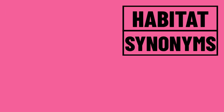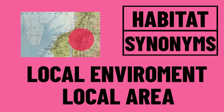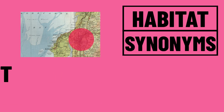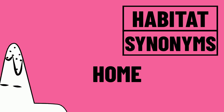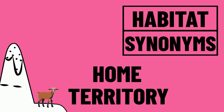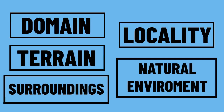Let's move on and take a look at some synonyms of habitat. We could use the terms local environment or local area as a good replacement for the word habitat. Another word is home, but think of this more as in your home city and not your house. Another word we have is territory, and this word imparts the ownership and relationship of the animal to the area. Other synonyms include domain, terrain, surroundings, locality and natural environment.